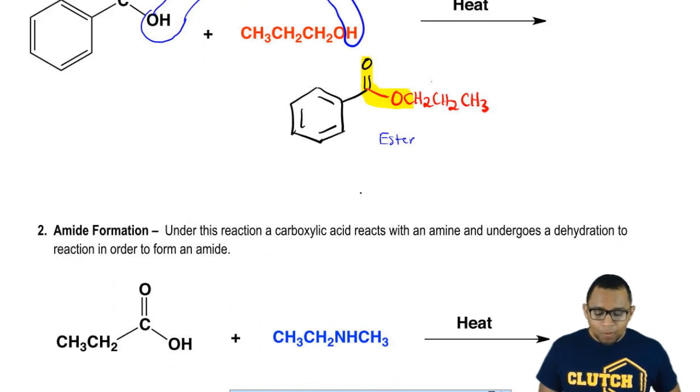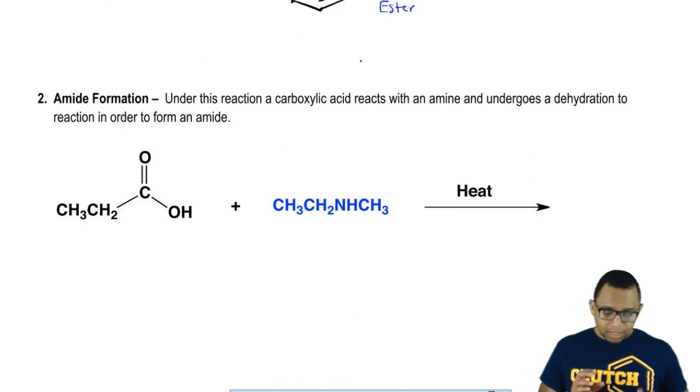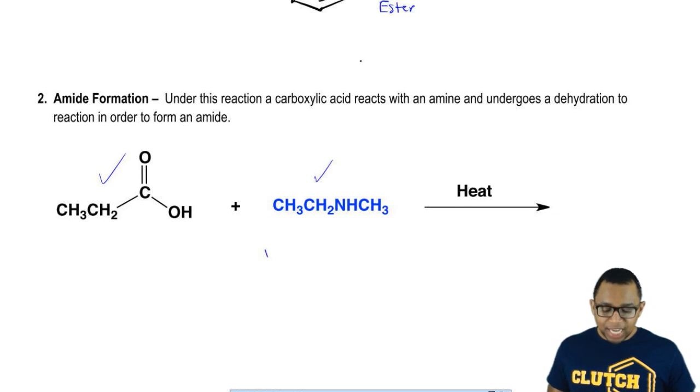In the same way, we can make something called an amide in a very similar way. Let's see how that works. Amide formation: under this reaction, a carboxylic acid reacts with an amine and undergoes a dehydration reaction in order to form an amide.